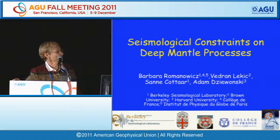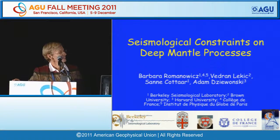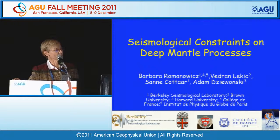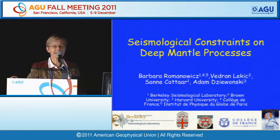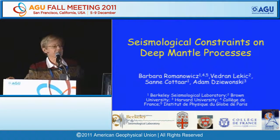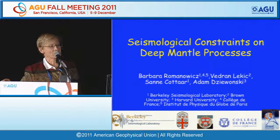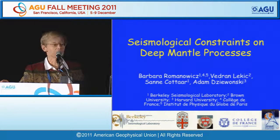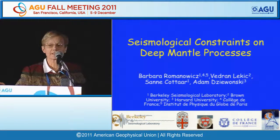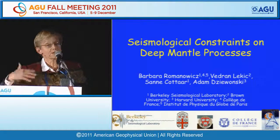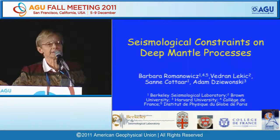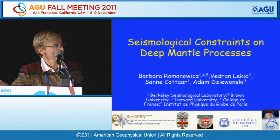After this little technical incident, we're switching to seismological constraints on deep mantle processes. There are two ways seismology can provide constraints on deep mantle structure: one is global tomography, and the other is forward modeling of various seismic phases.